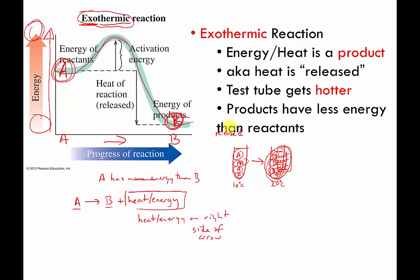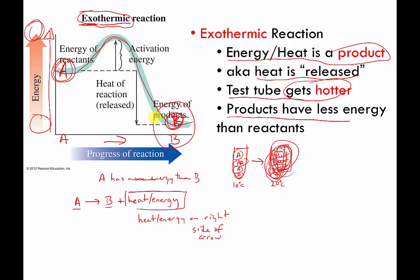Another way of saying that is energy or heat is a product. That just means it's on the right side of the arrow in the equation. Heat is released. If you do this type of reaction in a test tube, you might feel the test tube get warmer because heat is being released. Another way of saying that, again, is that the products, in this case B, they have less energy than the reactants, which was A. And so that's all sort of shown on this little chart over here.